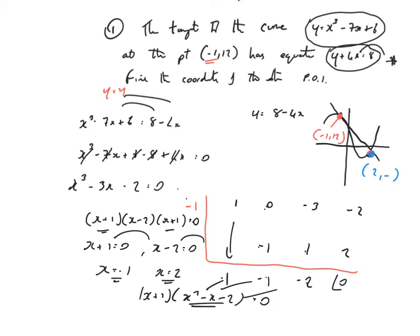To get the y-coordinate, just substitute into an equation that starts with y — I could put it into either equation, it doesn't matter. Let's put x equals 2 into y equals 8 minus 4x: that's 8 minus 4 lots of 2, which is 8 minus 8, equal to 0. So the point is (2, 0). The diagram is a little off — (2, 0) really should be on the x-axis.